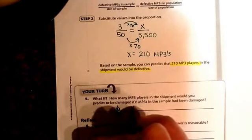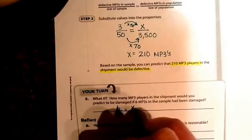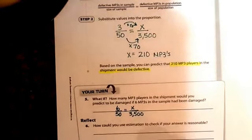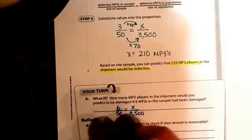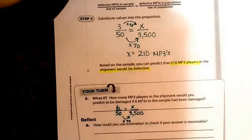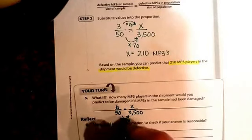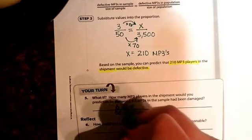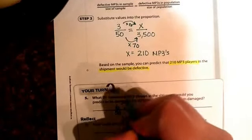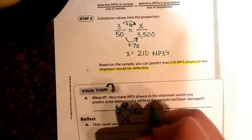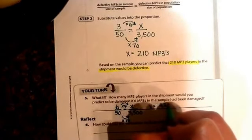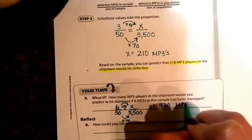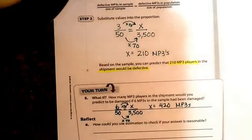how many would we have out of 3,500? Well, the shortcut is still the same. You're just going to have to multiply the denominator by 70. So we're going to do the same thing to our numerator times 70. And 6 times 70 would be 420 MP3s that would be defective.